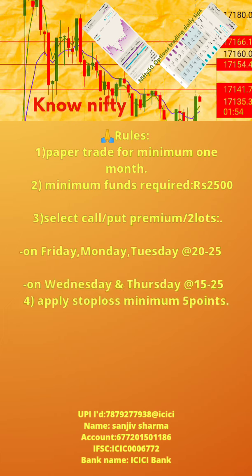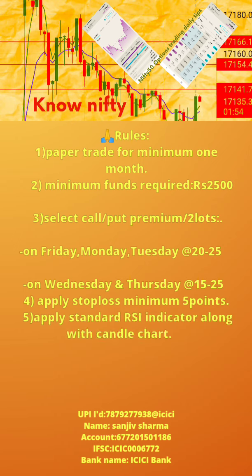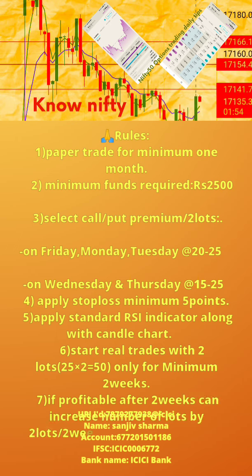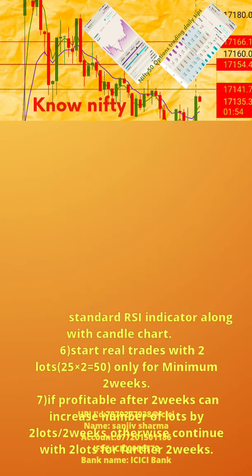4. Apply stop loss of minimum 5 points. 5. Apply standard RSI indicator along with candle chart. 6. Start real trades with 2 lots — that is 25 per lot into 2, equal to 50 — only for minimum 2 weeks. 7. If profitable after 2 weeks, increase number of lots by 2 lots; otherwise continue with 2 lots for a further 2 weeks.